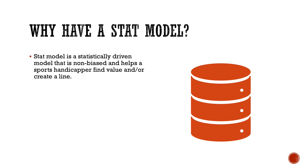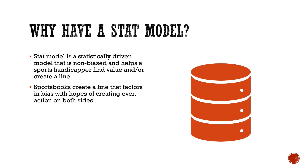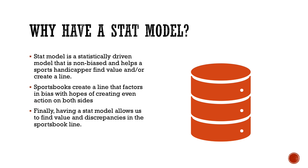Our stat model is going to be better than the sportsbook's line because there's no bias factored in — it's pure stats. Now there are two parts to handicapping: the objective part, which is the stat model, and the subjective part, where we factor in things not related to stats — like home field advantage or injuries. We combine both to make a play, but for this video we're focused solely on the stat model.